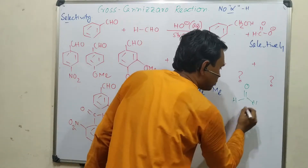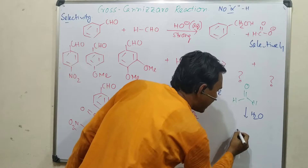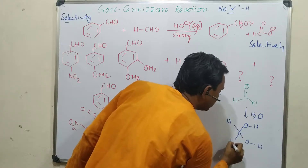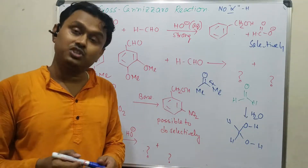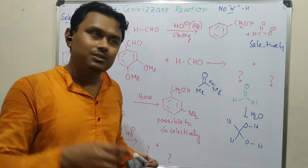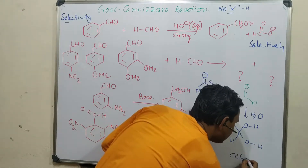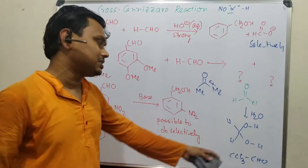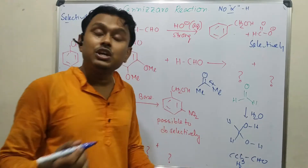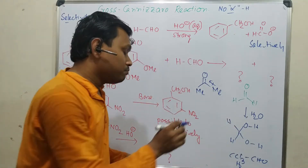It is observed that formaldehyde remains 100% as a gem diol in water, whereas other aldehydes do not. A special example is chloral (CCl₃CHO) — due to the strong -I effect of the CCl₃ group, the carbonyl carbon becomes electron-deficient, favoring gem diol formation. In contrast, with CH₃CHO the equilibrium lies toward the aldehyde side. So formaldehyde is very electron-deficient and readily undergoes gem diol formation.